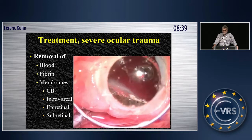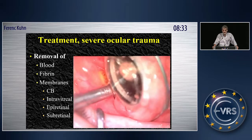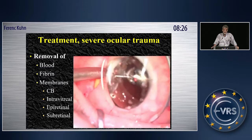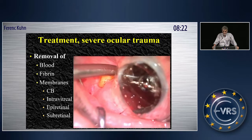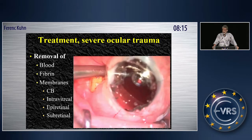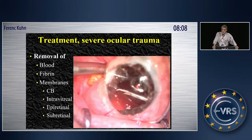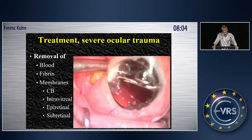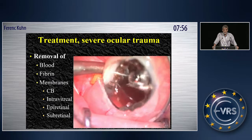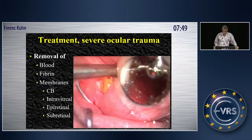Another thing that is absolutely crucial is to look at the ciliary body in these eyes. Even in a phakic eye, you have to clean the ciliary processes from any tissue that you see there, whether it's vitreous, fibrin, or whatever. You have to do indentation — it depends on whether the eye is phakic, aphakic, or pseudophakic. That will determine whether you need somebody else to do the indentation or you do it yourself. This is a crucial maneuver to reduce the risk of PVR and also to reduce the risk of phthisis, which is a very common complication in these severely injured eyes.